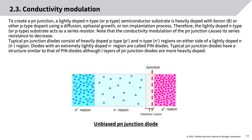Note that conductivity modulation of the PN junction causes its series resistance to decrease. Typical PN junction diodes consist of heavily doped P-type (P+) and N-type (N+) regions on either side of a lightly doped N− region. Diodes with an extremely lightly doped N− region are called PIN diodes. Typical PN junction diodes have a structure similar to that of PIN diodes, although the I layers of PN junction diodes are more heavily doped.